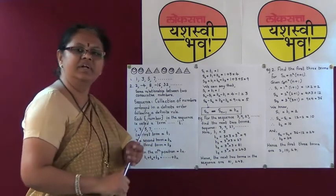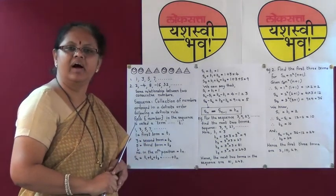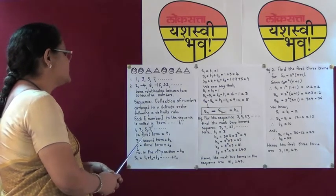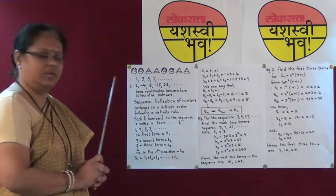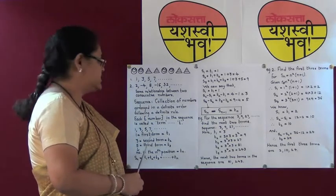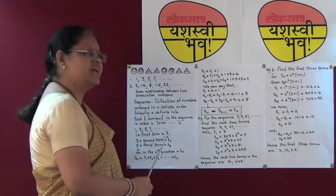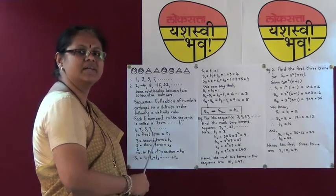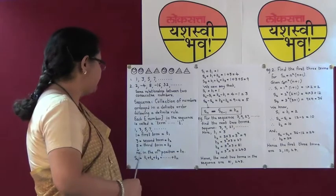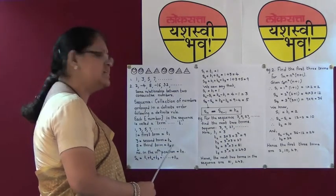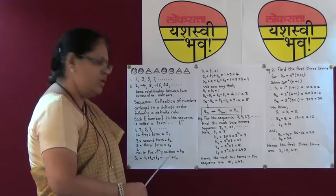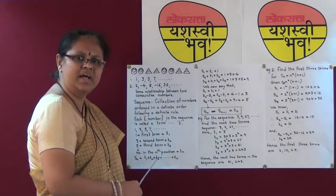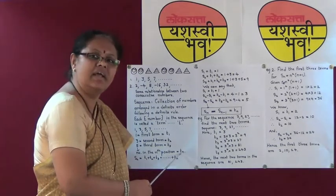Let us see one example to get a clear idea. Consider the sequence 1, 3, 5, 7 and so on. Here, 1 is the first term denoted as t1. 3 is the second term denoted as t2. 5 is the third term denoted as t3, and so on. The number in the nth position is denoted as tn.